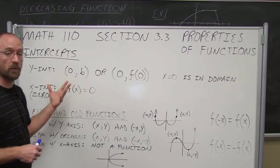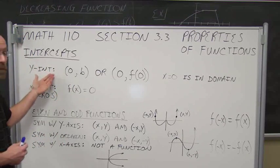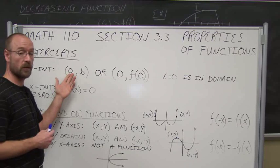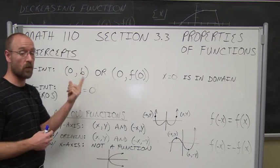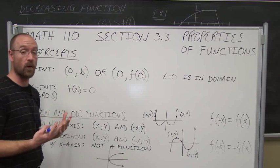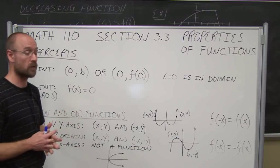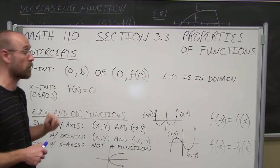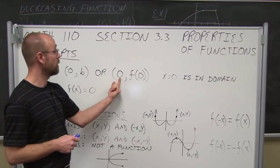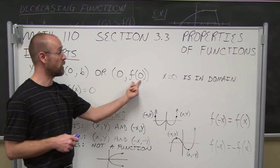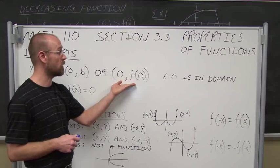The first thing we should be familiar with is intercepts. When we are looking for the y-intercept, we set x equal to 0 and find a y-intercept. Notice it's singular — there's only one y-intercept. If there were more than one, we wouldn't have a function; it wouldn't pass the vertical line test. In function notation, the y-intercept is the function evaluated at 0.